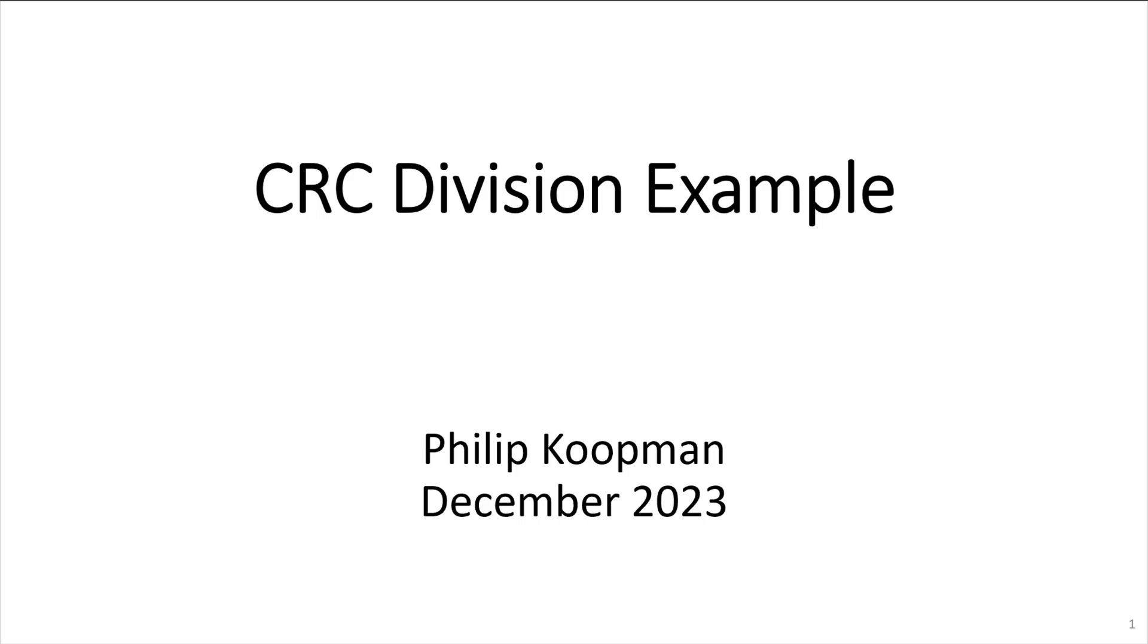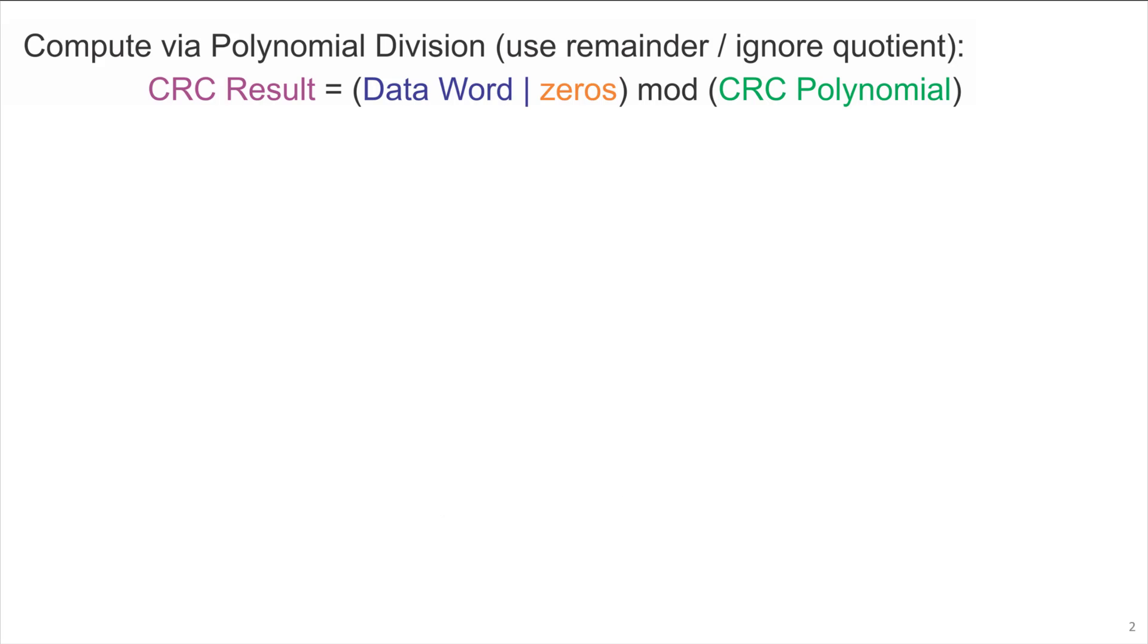This is Phil Koopman, and I'll be working through cyclic redundancy check division examples. To compute a cyclic redundancy check, one takes polynomial division and uses the remainder but ignores the quotient. The CRC result is the data word appended with some zeros mod the CRC polynomial.